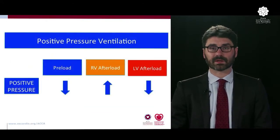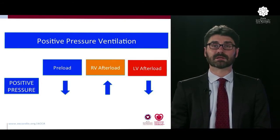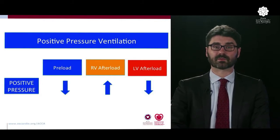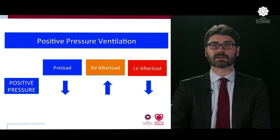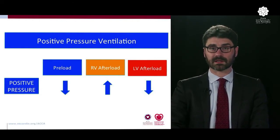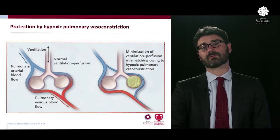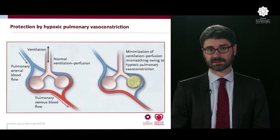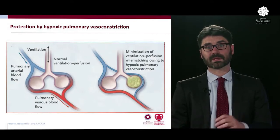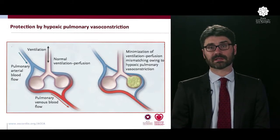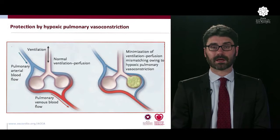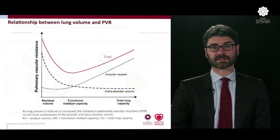When we ventilate our patient, we induce positive pressure, which by increasing the pressure in the pleura during inspiration impedes venous return, giving a decrease in preload. We also see different effects on afterload: an increase in right ventricular afterload and a decrease in left ventricular afterload. Often the reason we ventilate is hypoxia, and pulmonary hypoxic vasoconstriction prevents blood flow to non-ventilated areas, but this increases right ventricular afterload. By recruiting and oxygenating better, we hope to decrease that component.